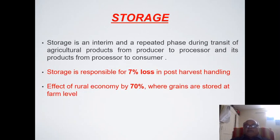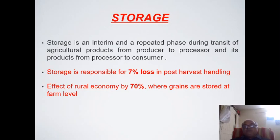Storage is an interim and repetitive phase. It is a repeated phase because we need storage at different locations during transit of agricultural products from one location to another. A producer grows cereal grains in the field, moves produce to the processor, it is stored for a certain duration, then reaches consumers — who also need to store material, for example five kg of wheat flour, for one month or 15 days.